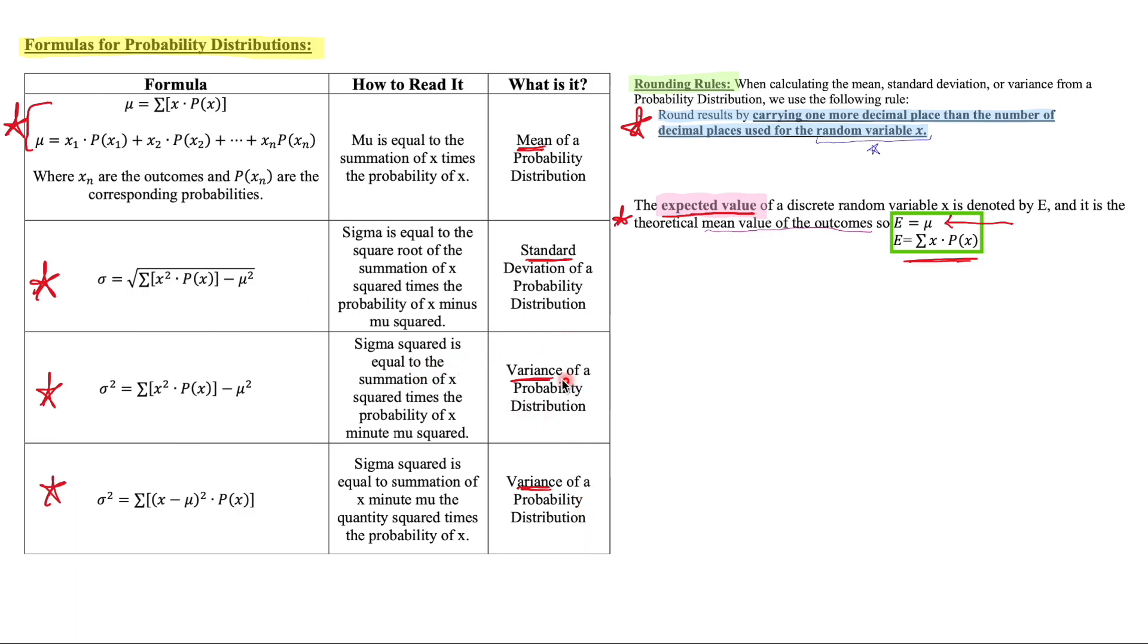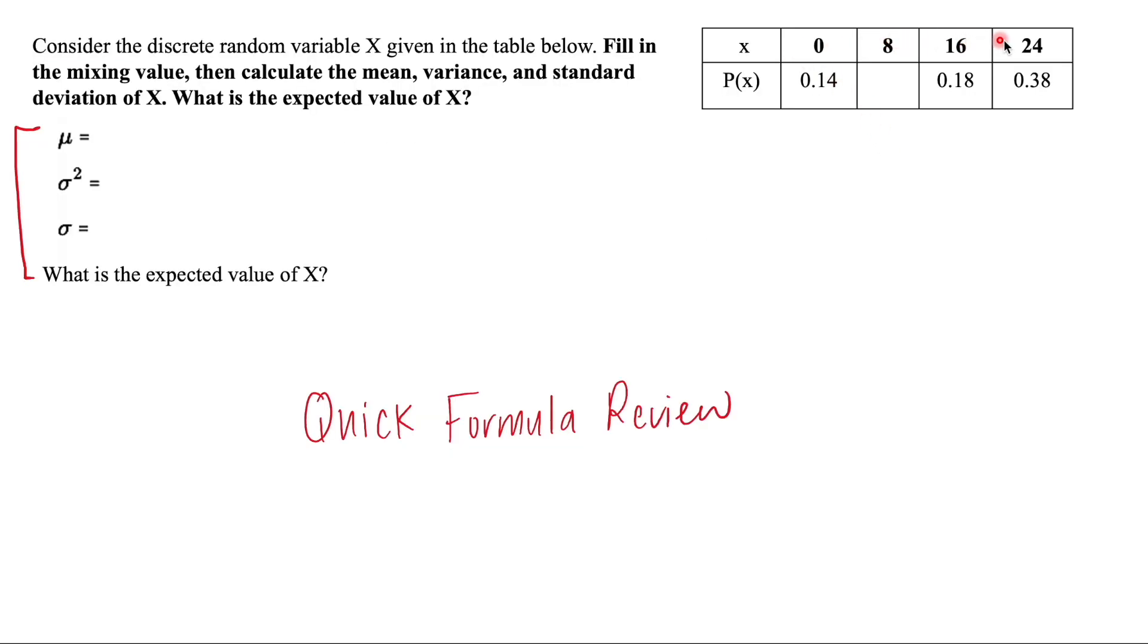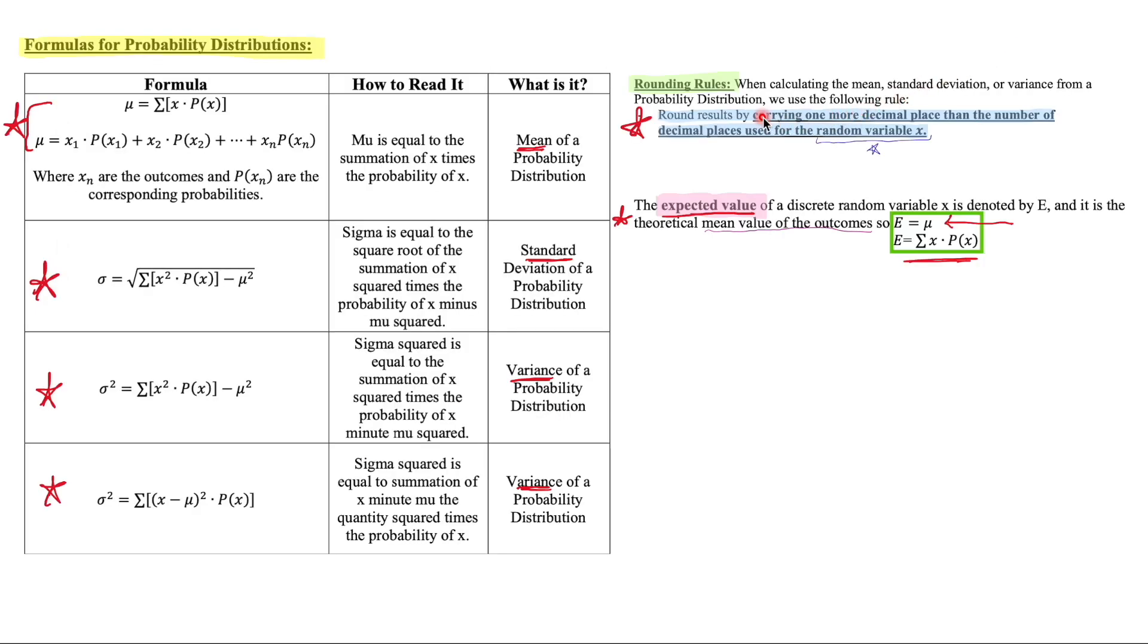Notice that there are two formulas that you could use for the variance and that is up to you and your preference of which one you want to use to get the answer. And if you're in my class, depending on which textbook you might be using, you might have a different rounding rule, but for us it's going to be one more decimal place than the random variable. So one more decimal place than your random variable in the distribution.